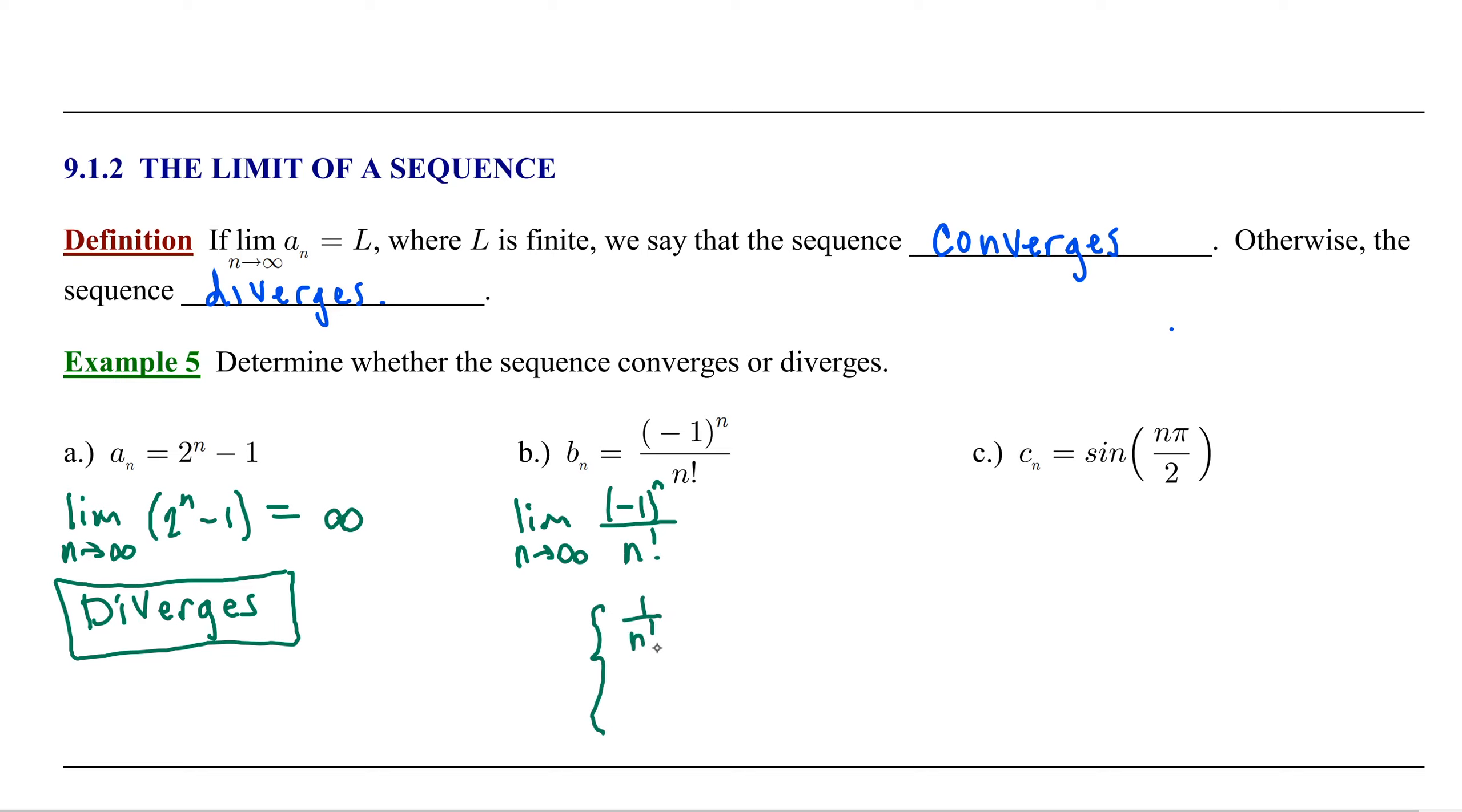then the value of this fraction is positive 1 over n factorial for n even. If n is odd, then that exponent will be negative. In either case, the limit of both of those two expressions approaches 0 as n approaches infinity. So because both of those subsequences approach 0, the limit of this sequence is also 0. Because that is a finite limit, we would say that this sequence converges.